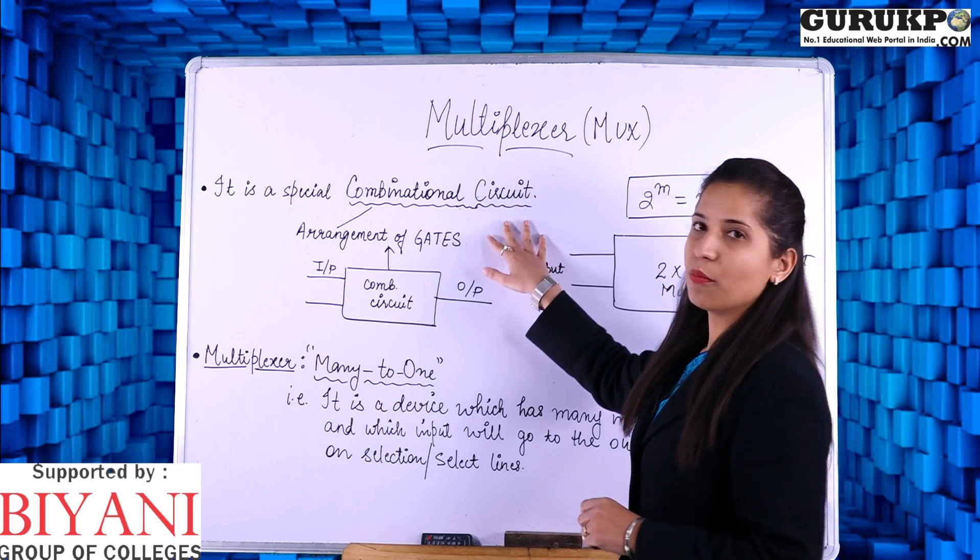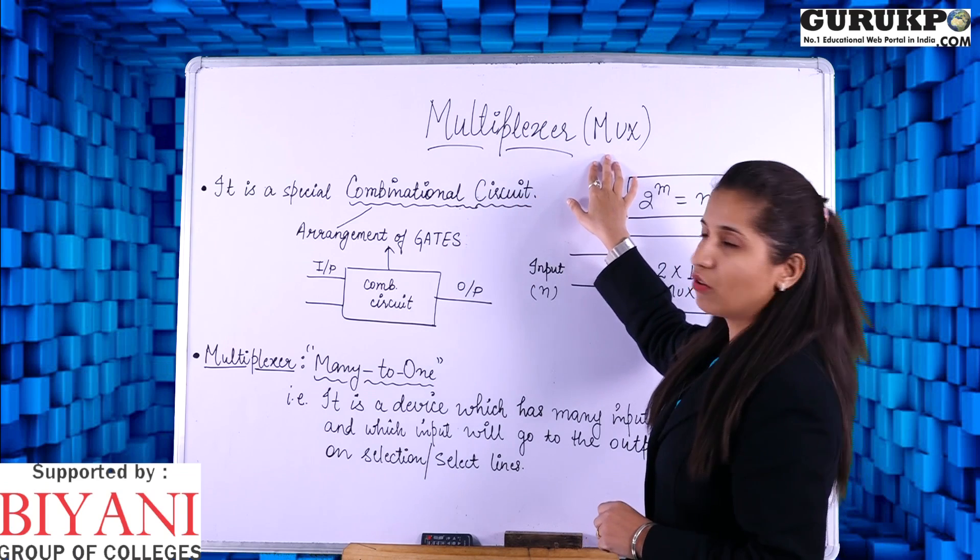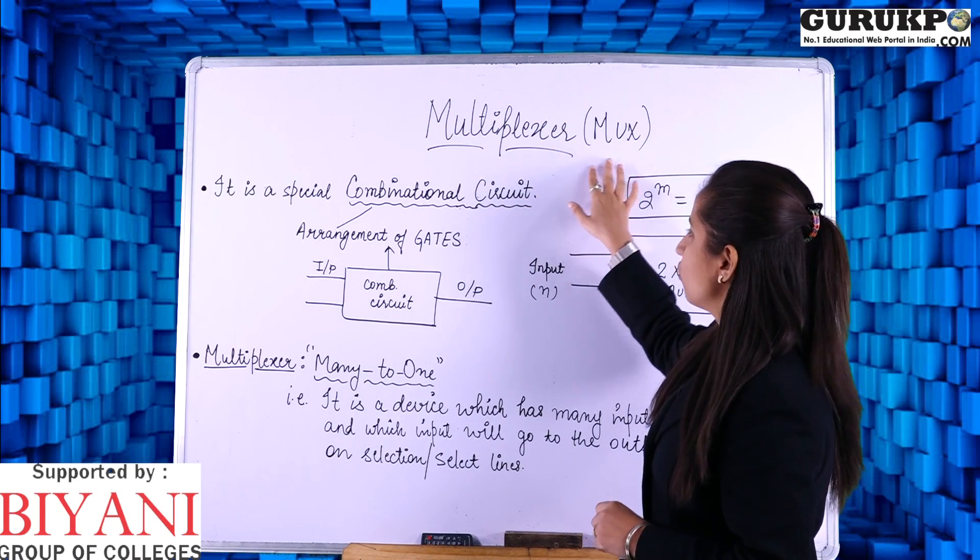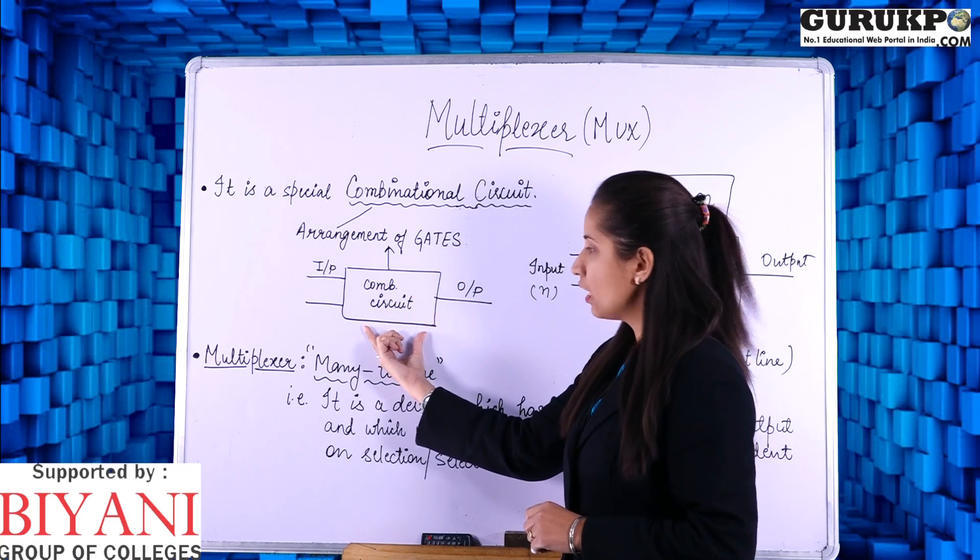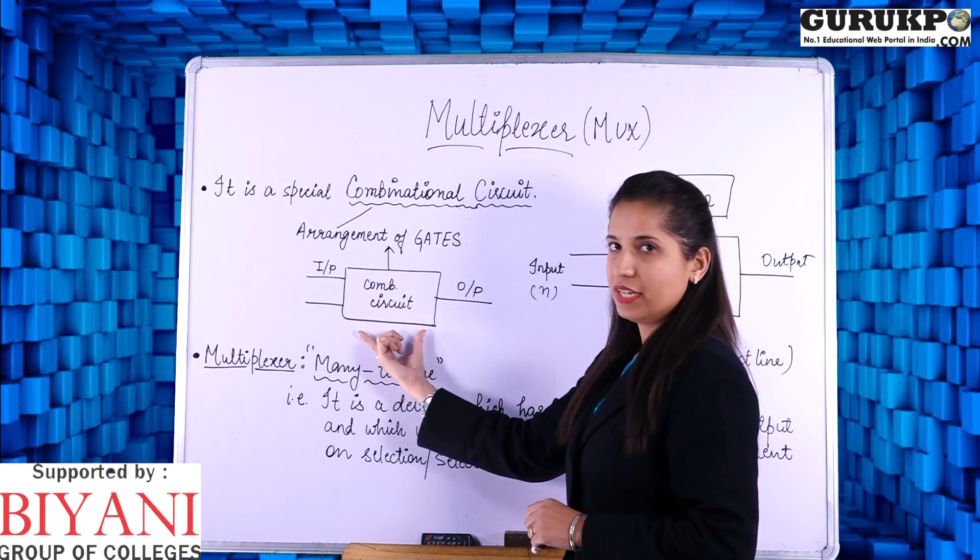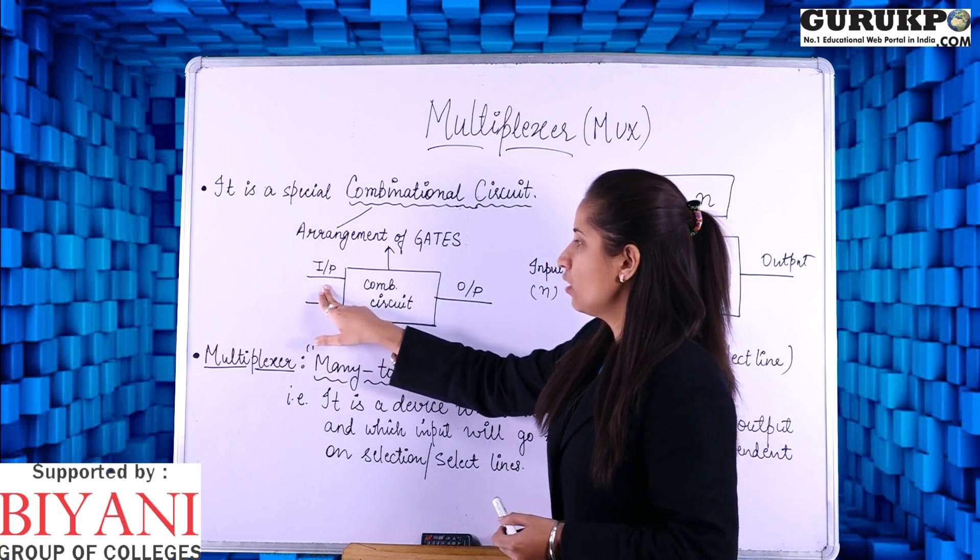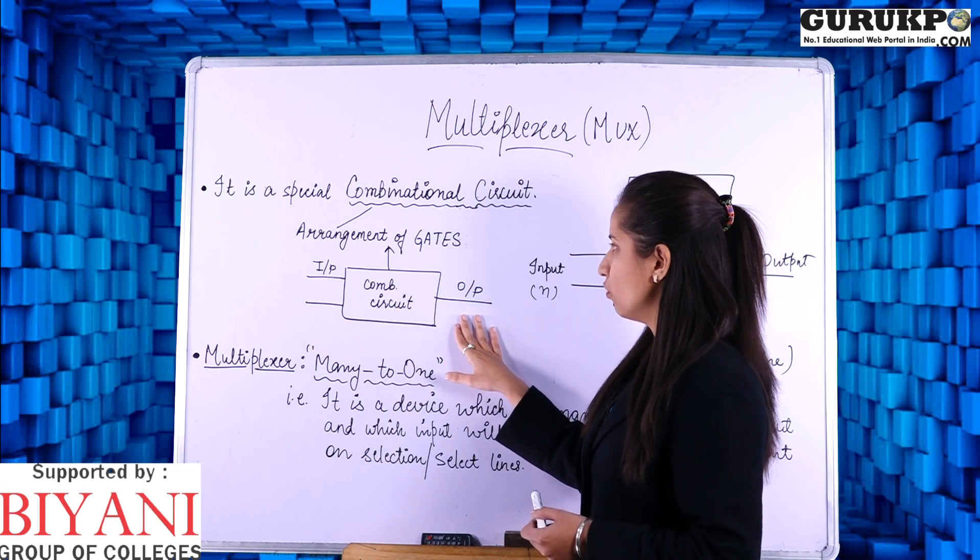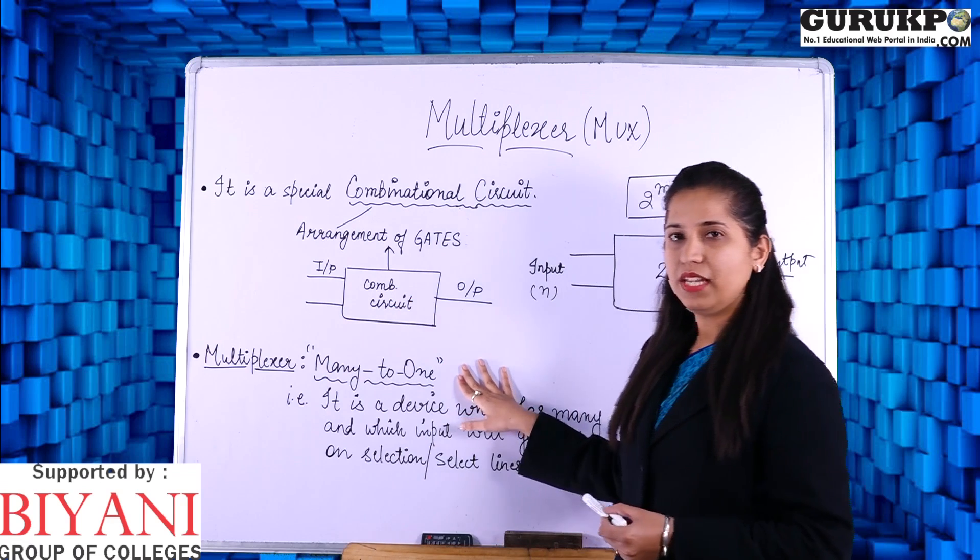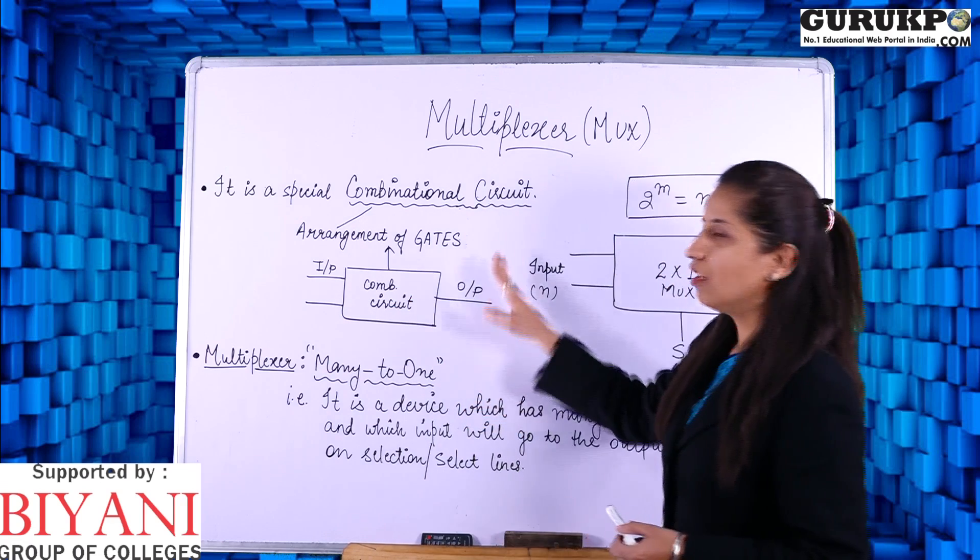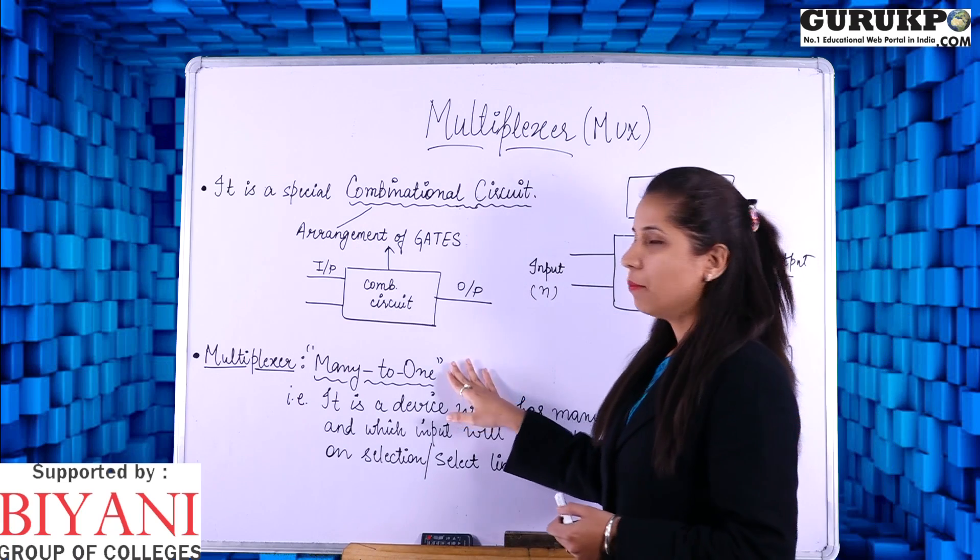Multiplexer, it is a special combinational circuit, we also call it as MUX or MPX. It is a combinational circuit, a combination of different gates. Here we have arrangement of different gates, they can be AND gate or OR gate, and from the LHS we have input and RHS we have the output. Multiplexer is defined as many to one, that means it can have many inputs but only single output, that is why it is called many to one.